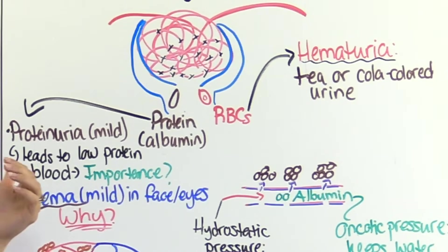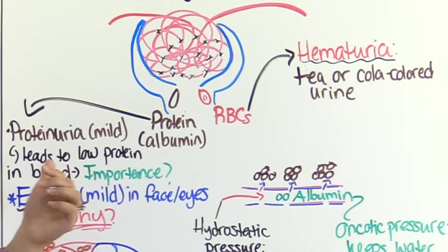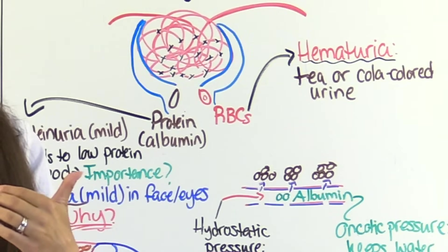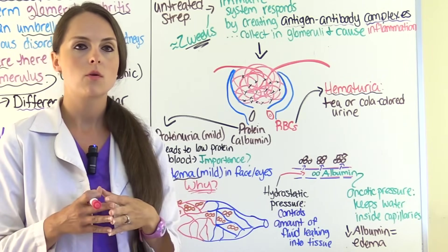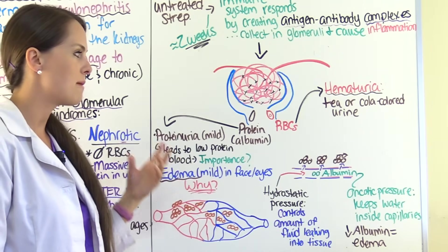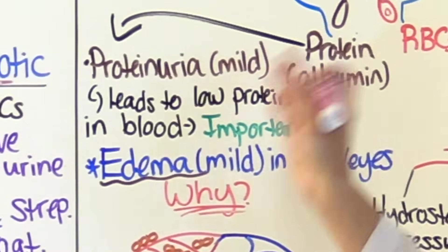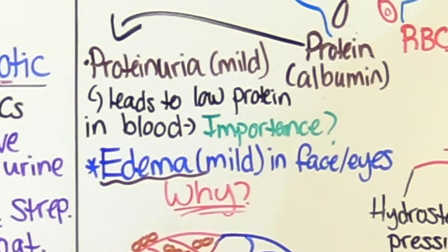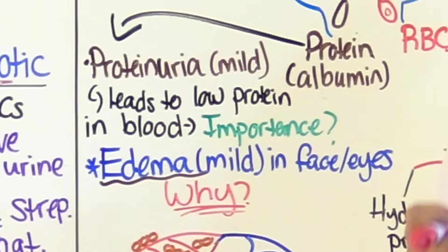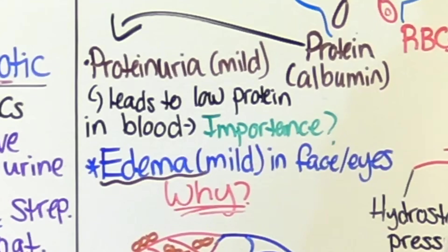Red blood cells enter the filtrate and change its color, producing the sign called hematuria where urine looks tea-colored or cola-colored. This will be one of the most prominent signs prompting patients or their parents to seek treatment. Some proteins will also be lost — remember, this is a mild amount in nephritic syndrome, whereas in nephrotic syndrome it's a massive loss. This loss of protein causes low protein levels in the blood.